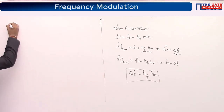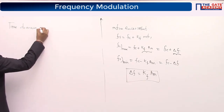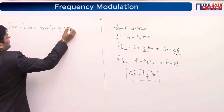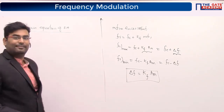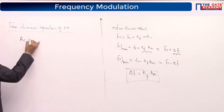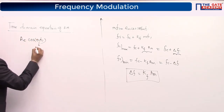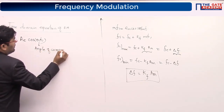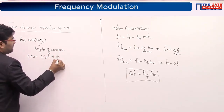Now let's derive the time domain equation of FM. We start with Ac·cos(θ(t)), where θ(t) is the angle of carrier equal to ωc·t + φ. We also know that differentiating gives dθ/dt = 2πf. So for a general θ = ωt = 2πft, we get f = (1/2π)·(dθ/dt).